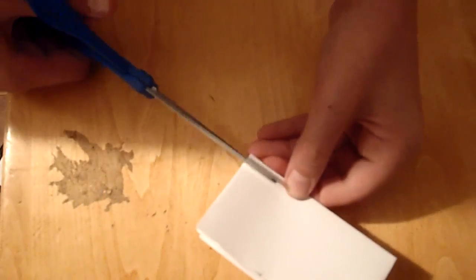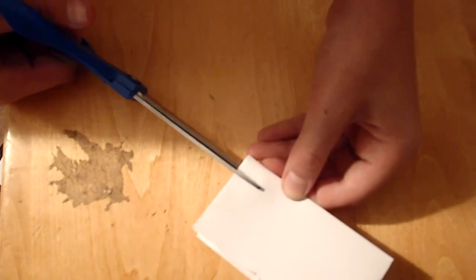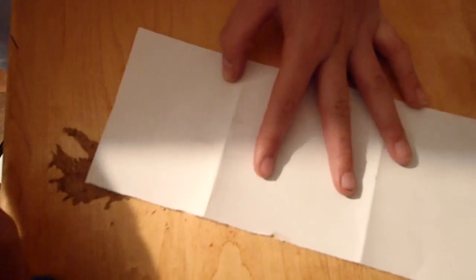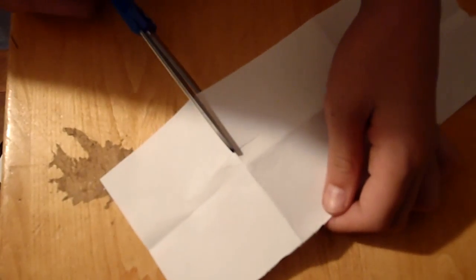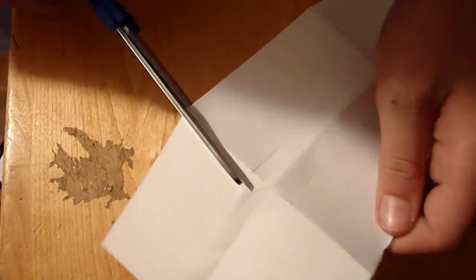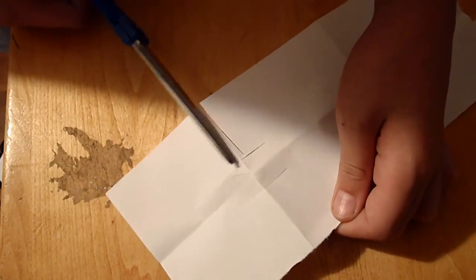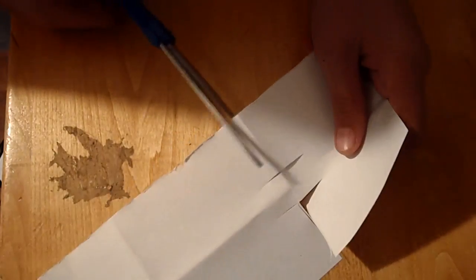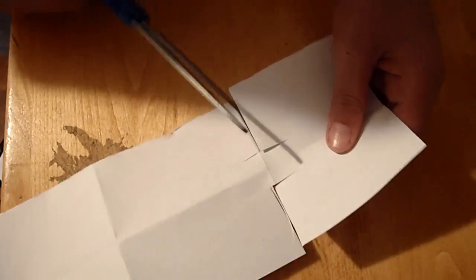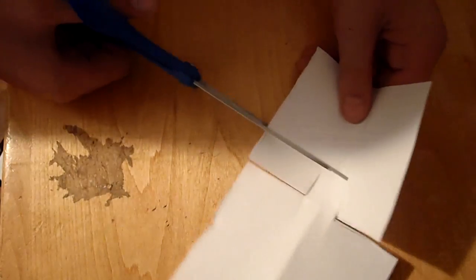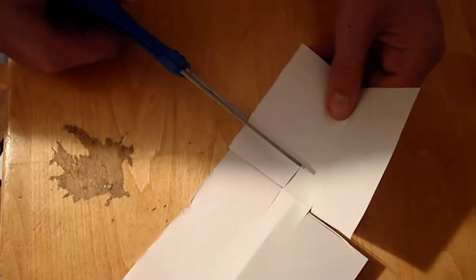Then you want to take your scissors and cut it on either side. Then you want to unfold it right back here. Then on this crease right here, you want to just cut so that that would make the tail. And then cut to the end of that.